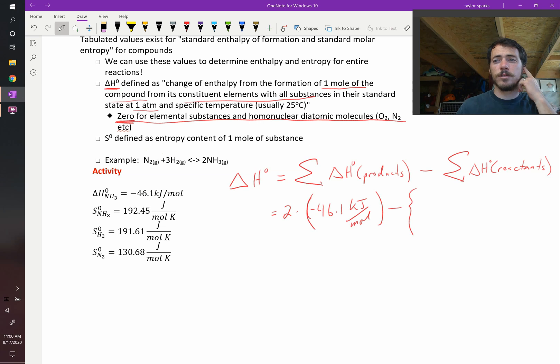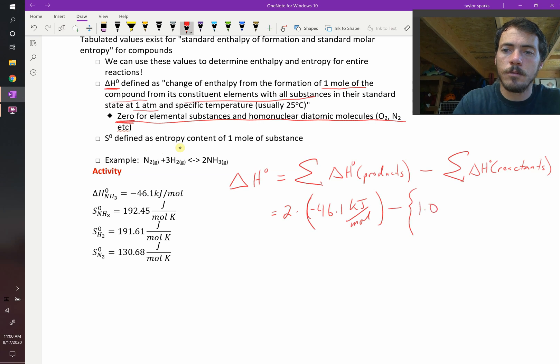Well what is the formation of nitrogen? We just said that since nitrogen exists as a homonuclear diatomic molecule, its formation enthalpy is just zero, so it's going to be one times zero plus three times, hydrogen is the same as nitrogen, so they are both going to be equal to zero. So this whole term just goes away to zero.